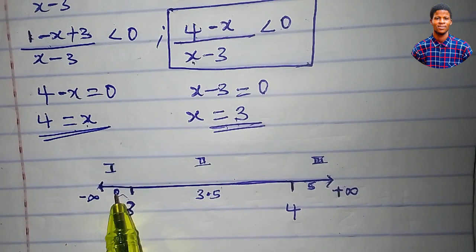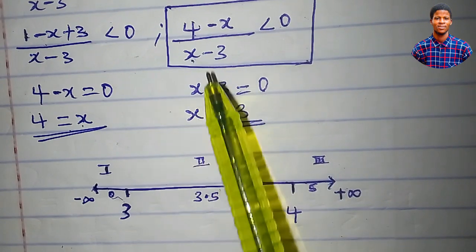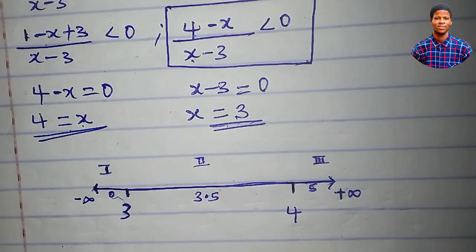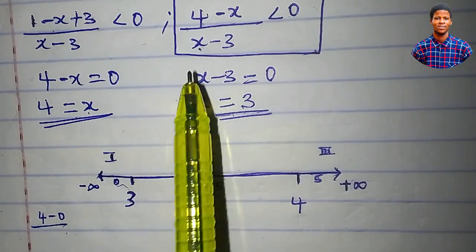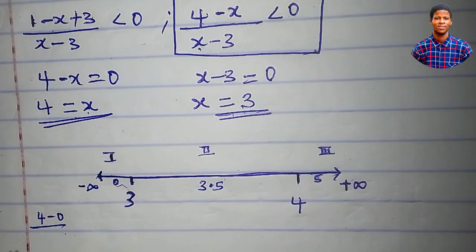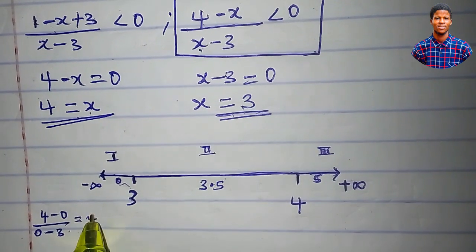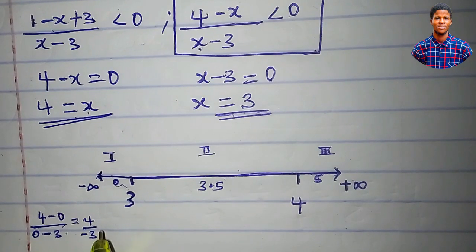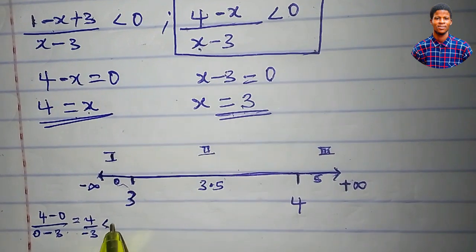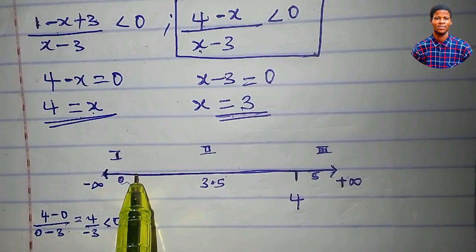We are going to use these chosen numbers to determine which regions satisfy this inequality. Let's test region 1 using x equal to 0. We'll place 0 in for x: 4 minus 0, all over 0 minus 3. 4 minus 0 is 4; 0 minus 3 is minus 3. This is a negative number that is less than 0. Region 1 satisfies this inequality.